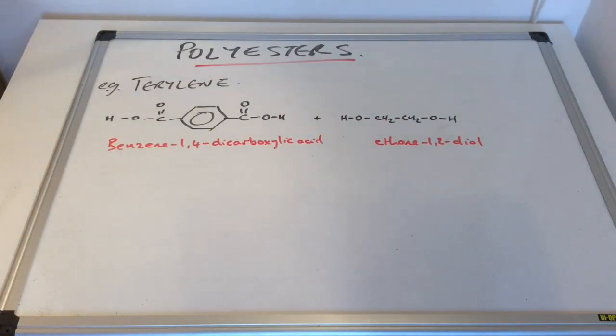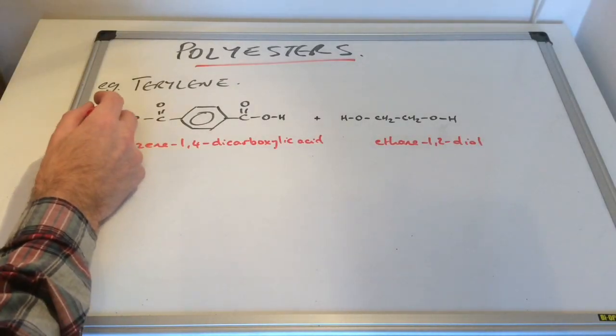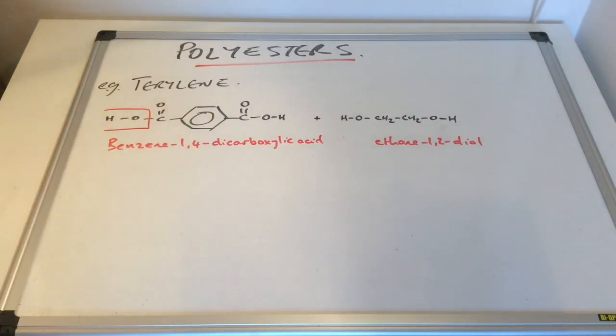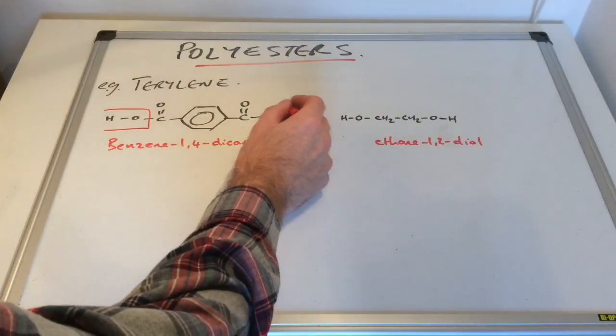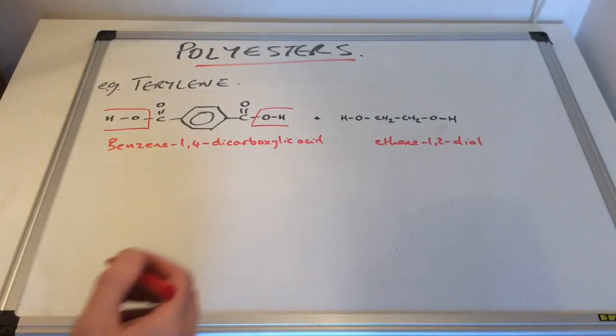So just apply the same sort of rule of thumb, the same logic as before. So we're going to take out the OH group from the carboxylic acid. So we need to do that with both of these. This is what my A-level chemistry teacher used to call lasso chemistry. And it really works, it really helps.